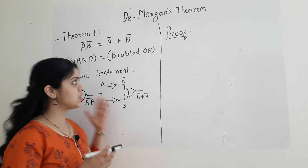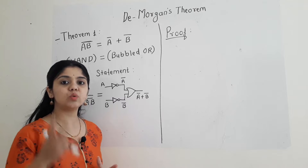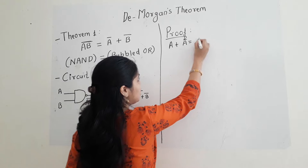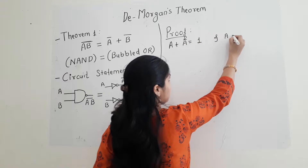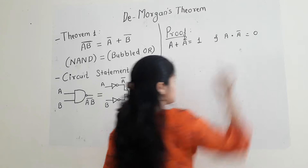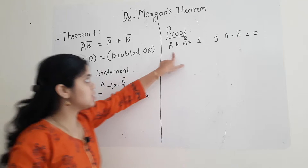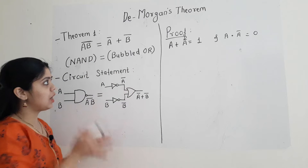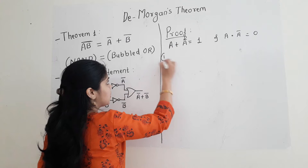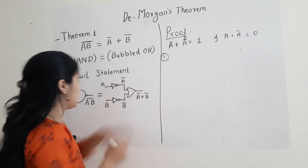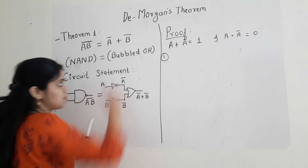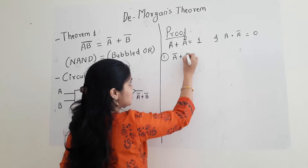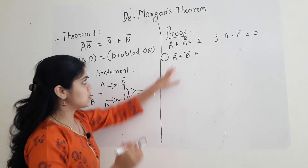If I want to prove this first DeMorgan's theorem, I have to prove the two complement theorems. That is: first, A plus A bar is equal to 1, and second, A dot A bar is equal to 0. If I prove both these complement theorems, then we can prove the first theorem of DeMorgan's. I will start with the first theorem, and I will be considering my A as my RHS, that is A bar plus B bar.